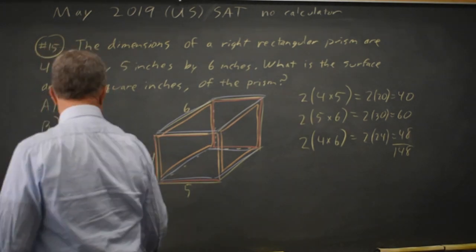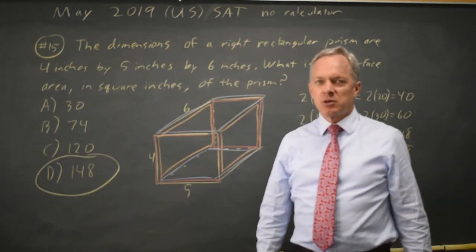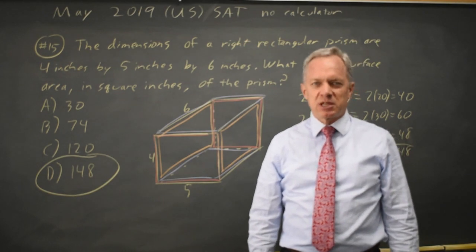It's the surface area of the right rectangular prism, which I prefer to call a box because that's what I think of it as.